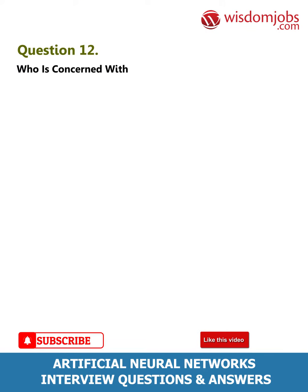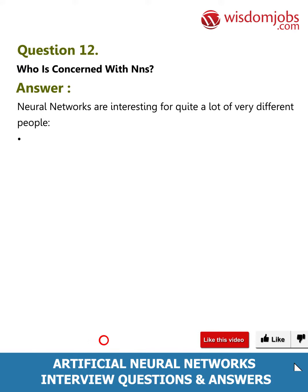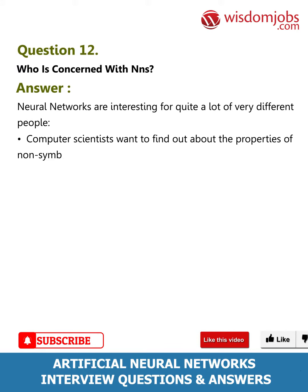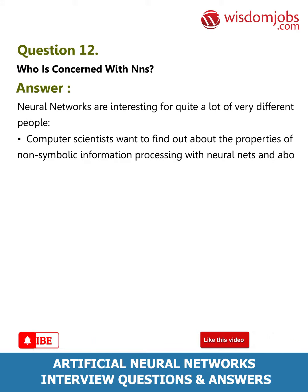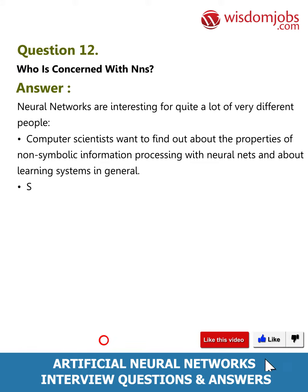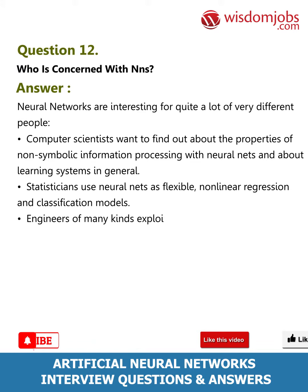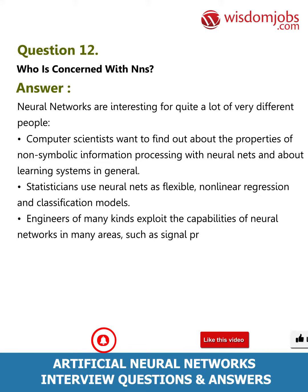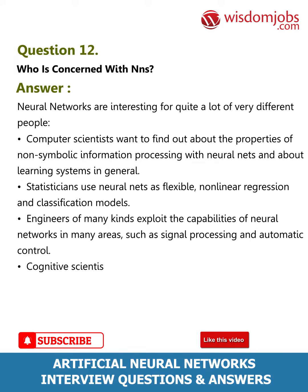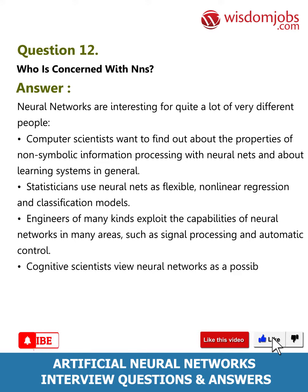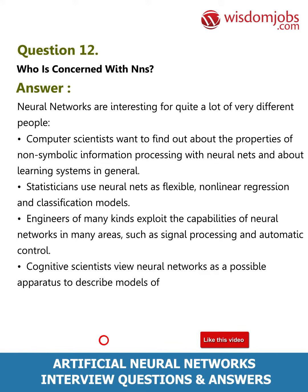Question 12: Who is concerned with neural networks? Neural networks are of interest to many different people. Computer scientists want to find out about the properties of non-symbolic information processing and learning systems in general. Statisticians use neural nets as flexible, non-linear regression and classification models. Engineers of many kinds exploit neural network capabilities in areas such as signal processing and automatic control.